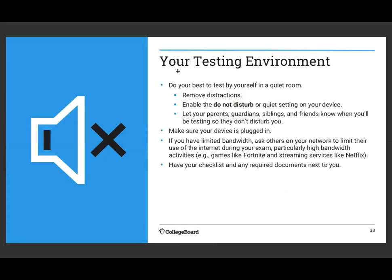Make sure you have a charged device when you're testing. Remove all distractions, put other devices on do not disturb or quiet settings, and tell everyone in your household — parents, siblings, grandparents — that you're taking an AP exam. This is a once-a-year thing and you don't get a second shot. Have them not play online video games or stream Netflix so they don't take up your bandwidth. It's a short exam — about 30 minutes of check-in plus 45 minutes to an hour of testing — so an hour and a half total. Everyone should be able to accommodate you if you ask nicely.